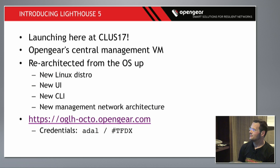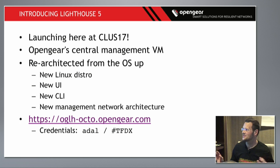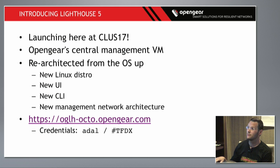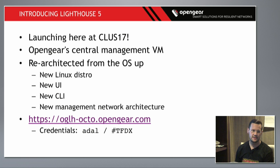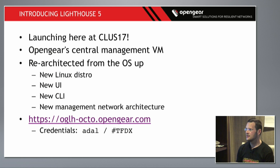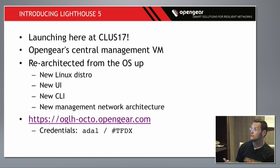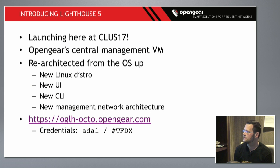We call it Lighthouse 5, but it probably should be called Lighthouse 1000 or X or something, because it's a complete re-architecture from the OS up. We've literally got a new Linux distribution based on Yocto Linux, new UI — an Ember.js UI layered over the REST API — new CLI, new config language, new config schema, new config backend using MariaDB, and a new management network architecture. I'll show you that in a minute.